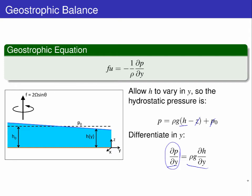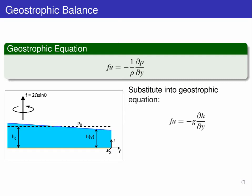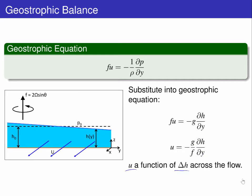This term is one that we have seen before in the geostrophic equation. It is substituted in, cancelling for density and rearranging for u, giving us u as a function of the across-stream free surface slope.